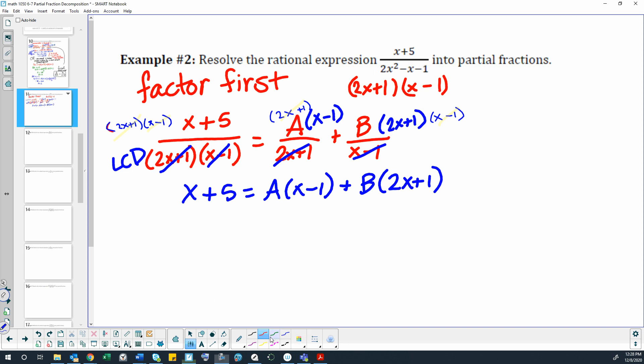Okay, so if we're going to go ahead and use our convenient x method again, we would let x equal 1. So then we would have 1 plus 5 equals A times 1 minus 1 plus B times—my computer doesn't like me—2 times 1 plus 1. So that would be 6 here and 0 here. And 2 plus 1 is 3B. So we should know that B equals 2. Right? Did I do that right? Okay.